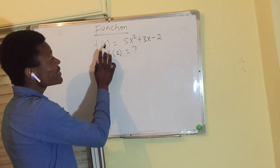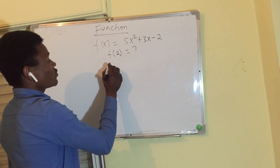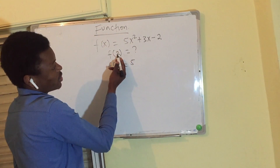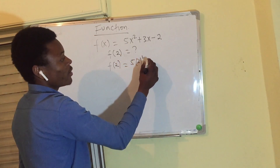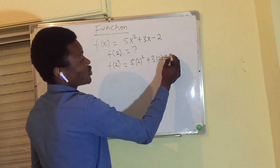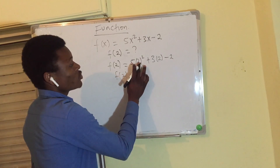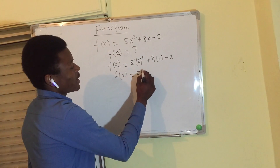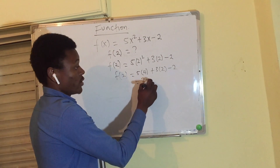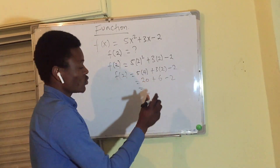Since we need f of 2, wherever we see x we substitute 2. So f of 2 equals 5 times 2 squared, plus 3 times 2, minus 2. That gives us 5 times 4 plus 3 times 2 minus 2, which is 20 plus 6 minus 2. 20 plus 6 is 26, and 26 minus 2 is 24.